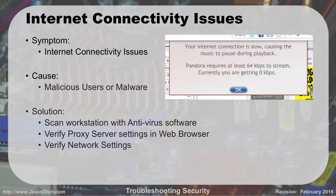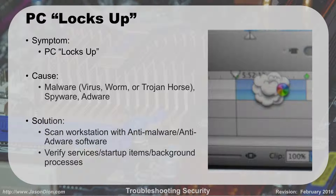Internet connectivity issues can be caused by malicious users and malware. Scan the workstation with antivirus, verify your proxy settings in the web browser, and verify your network settings. If you're having trouble connecting, double-check those settings to make sure they're working properly. A lot of the same pattern: if it's malicious, run antivirus; if it's slow, it might be a service or startup issue.